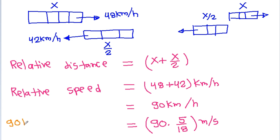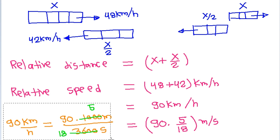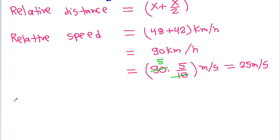Here, 90 km per hour equals 90 times 5 by 18 meter per second. Since 1 km is 1000 meters and 1 hour is 3600 seconds, we simplify: 90 km per hour equals 90 times 5 by 18, and since 18 times 5 is 90, it simplifies to 25 meters per second.